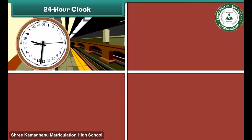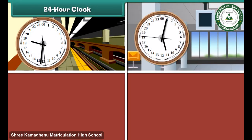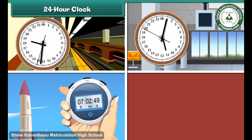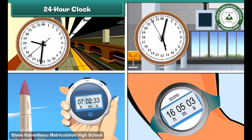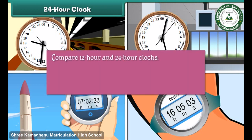The 24-hour clock is commonly used to specify the time of train and plane departures, take-off time of space shuttles, time of attack by the armed forces, etc. In order to understand it better, let us compare 12-hour and 24-hour clocks.